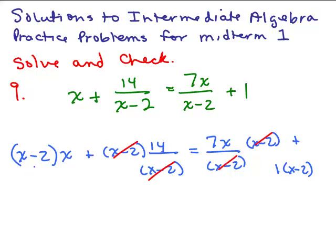So I'm left with (x-2) times x. Doing the distributive property, x times x is x squared, and x times negative 2 is minus 2x plus 14. On the other side, the (x-2) is canceled, so I have 7x plus x minus 2.